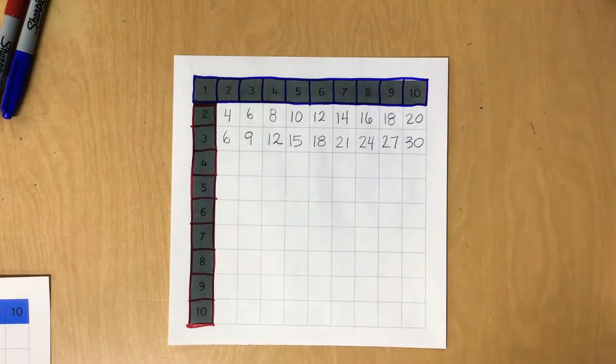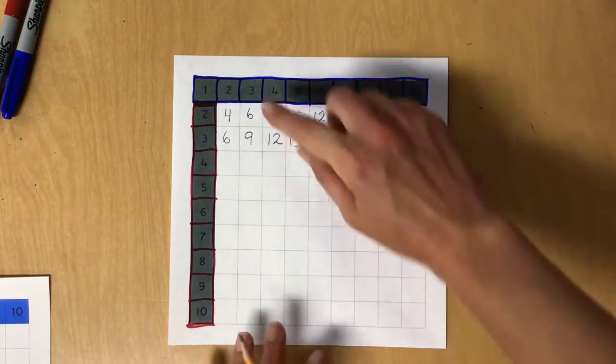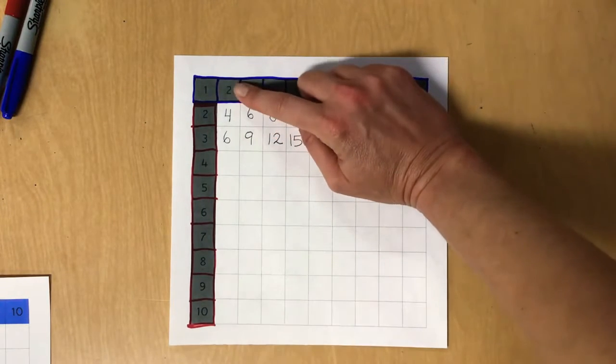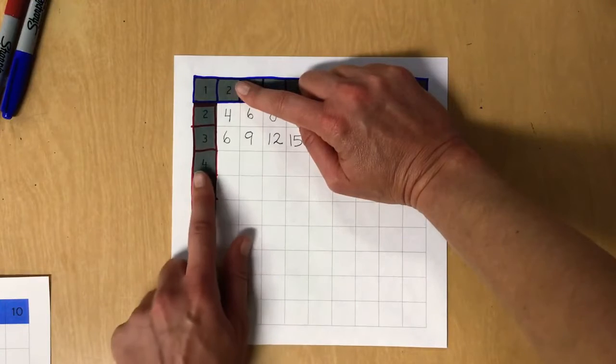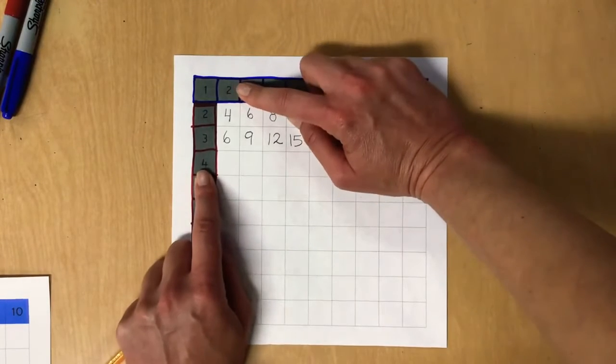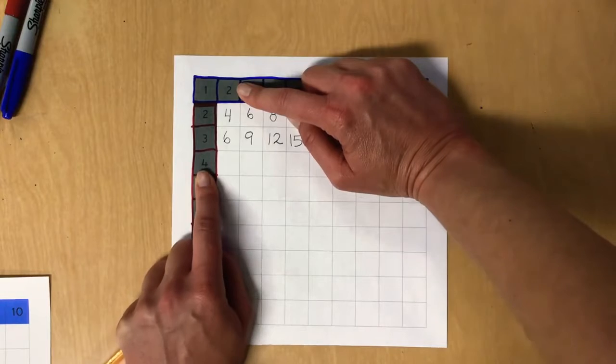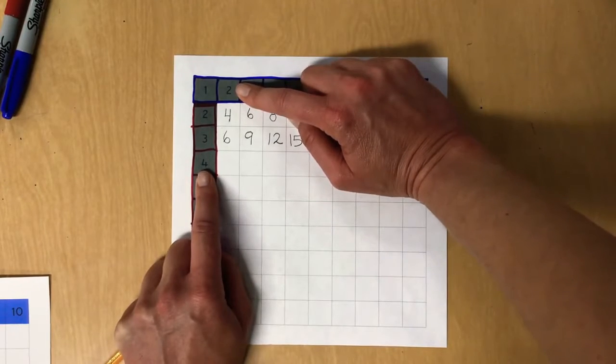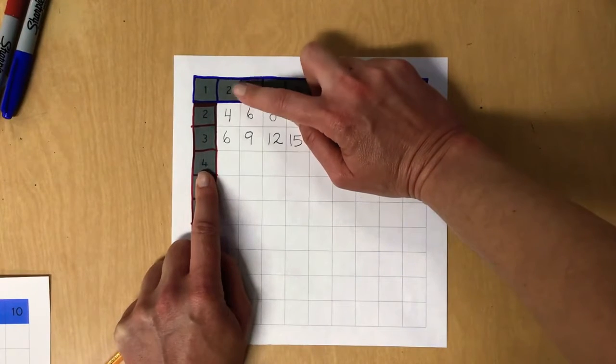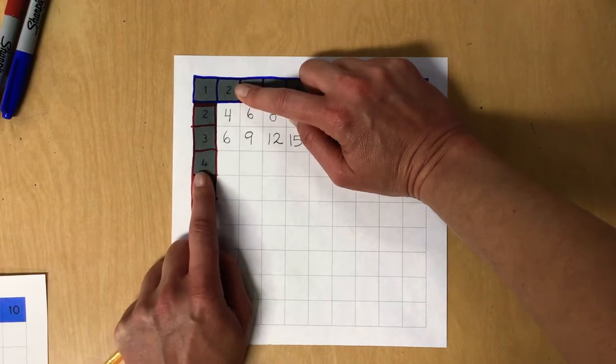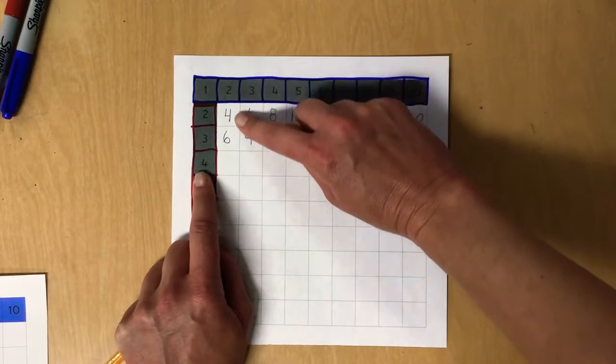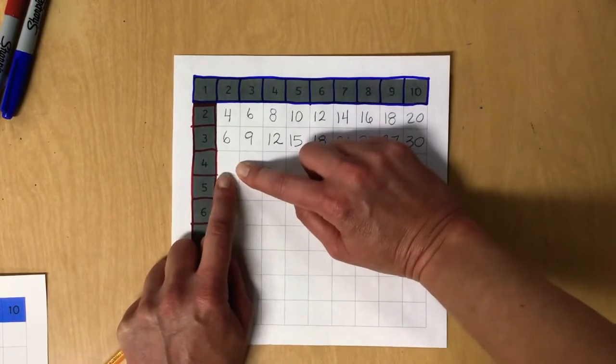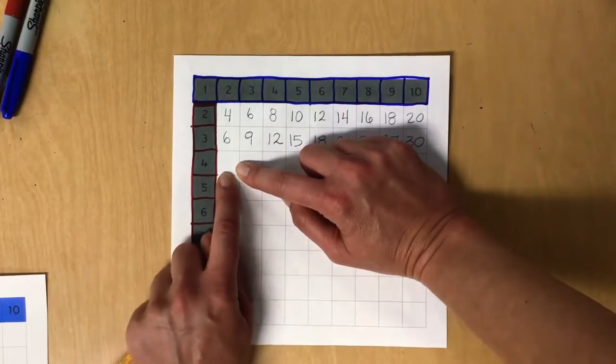All right, so first we're going to put our finger on the two up here and our other finger on the four down here. What multiplication equation is that showing? Can you call it out? Two times four, you got it. So let's slide our finger down and across. Two times four equals... call it out. Yes, eight.